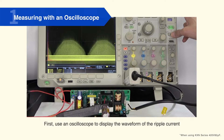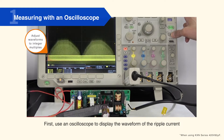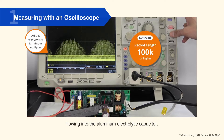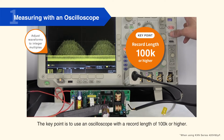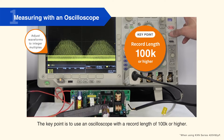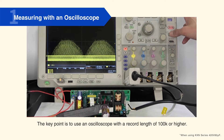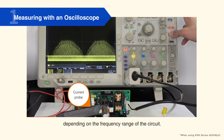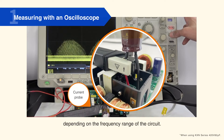First, use an oscilloscope to display the waveform of the ripple current flowing into the aluminum electrolytic capacitor. The key point is to use an oscilloscope with a record length of 100K or higher. Also, make sure to select the proper probe, either an AC probe or a DC probe, depending on the frequency range of the circuit.